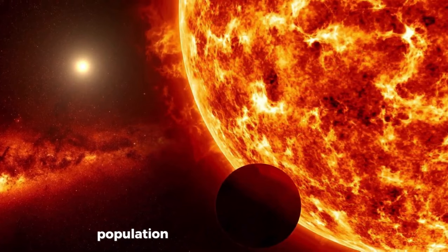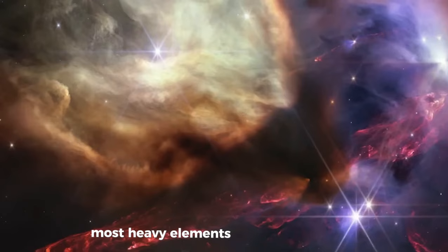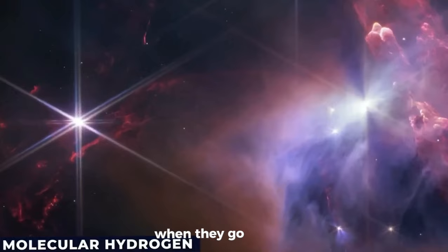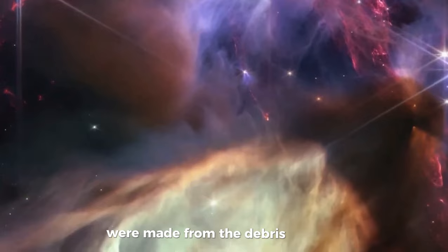Population 1 have the highest metallicities, and Population 3 have the lowest. Most heavy elements are produced by stars, either through fusion in their inner layers or in the moments of intense heat when they go supernova. The Population 1 stars currently littering the universe were made from the debris left behind when Population 2 stars exploded.